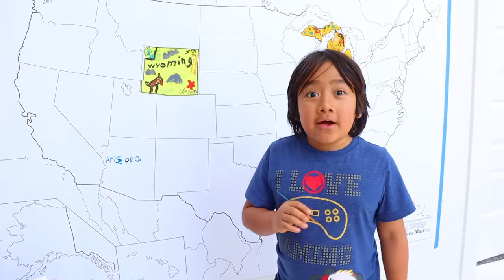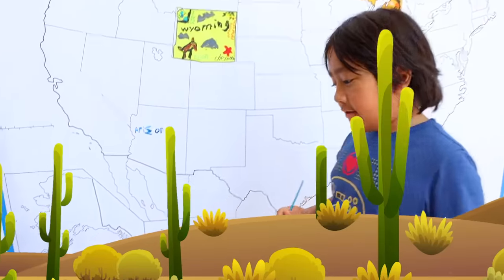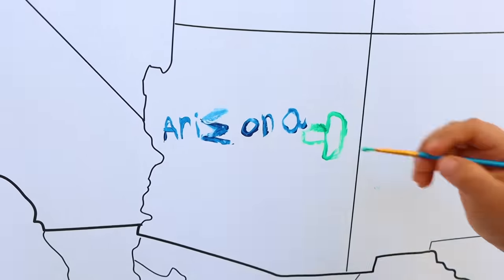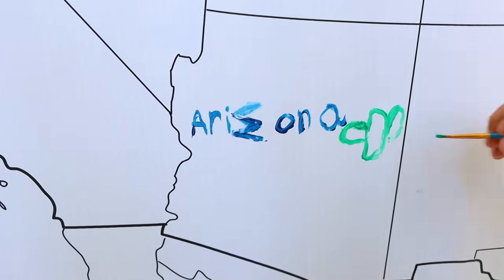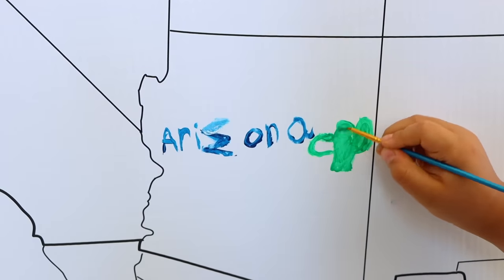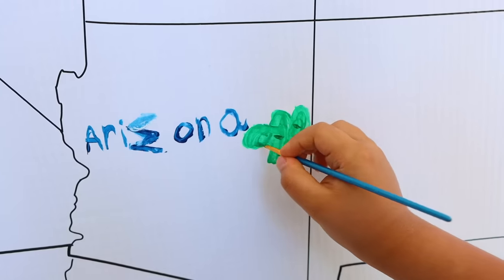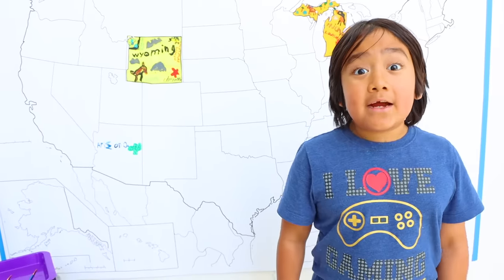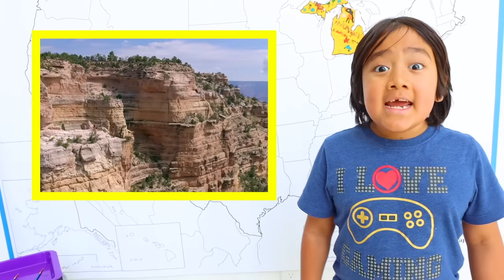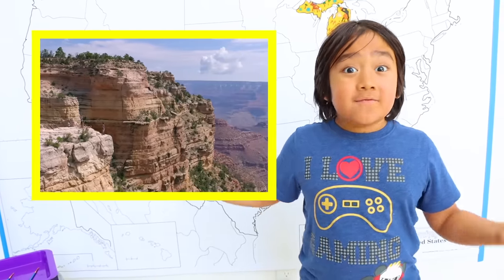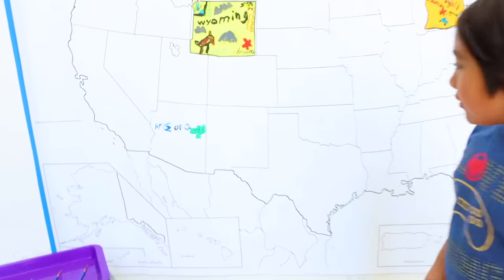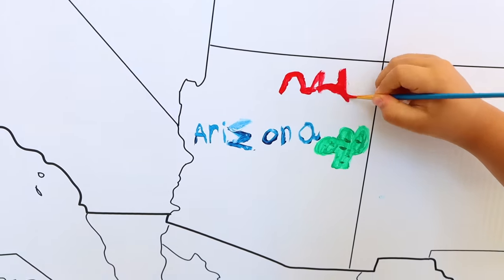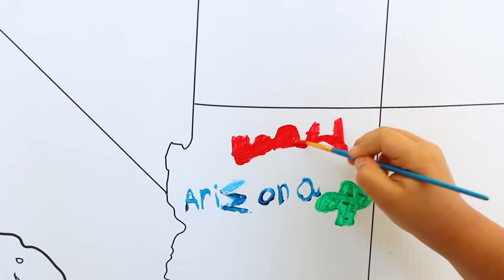Arizona has a lot of deserts, so I'm going to put some cactus. Maybe I'll make a cactus like this with arms going like that, then colored in. Did you know that Arizona is famous for the Grand Canyon? It's a valley that has lots of red rocks, and it's located right here. I'm going to draw some red rocks, and bigger red rocks.